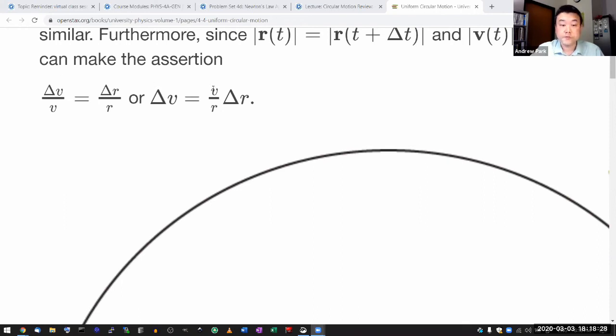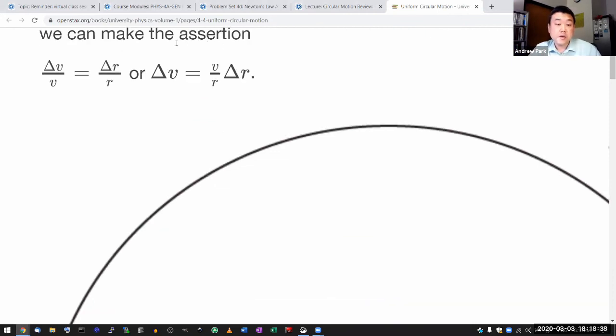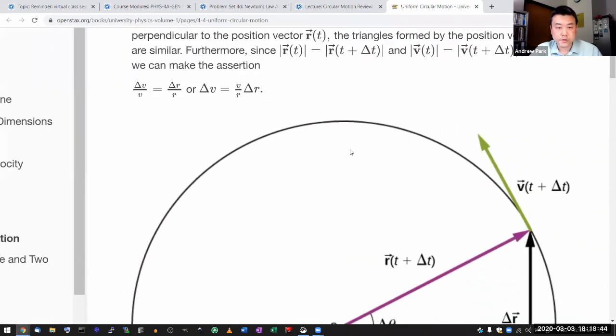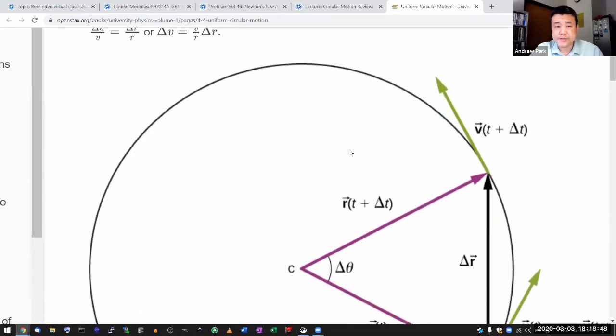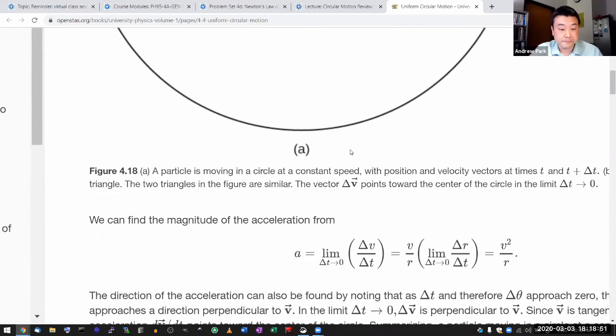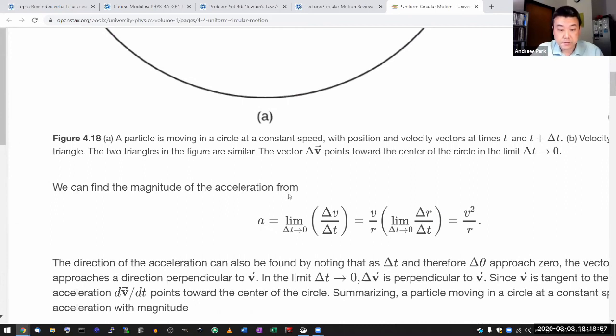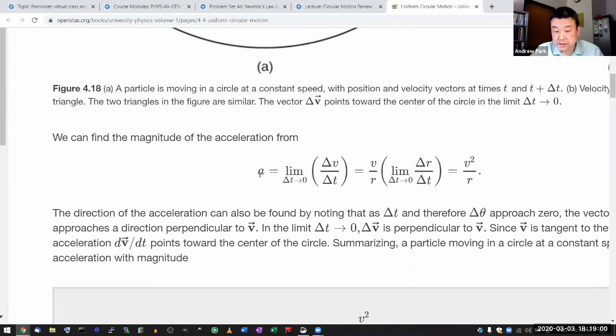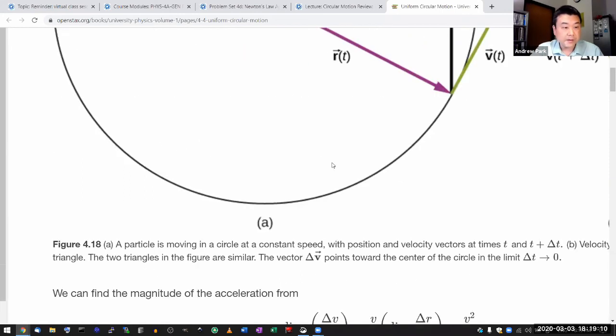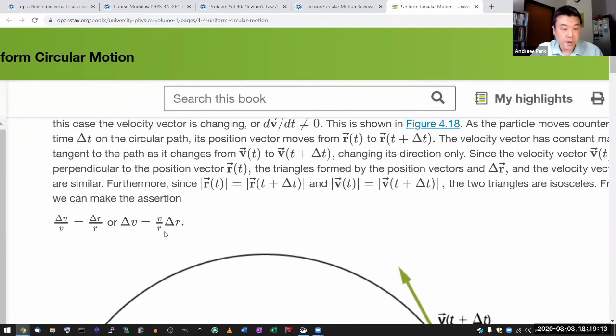And from this equation here they can say that solving for delta v, delta v is equal to v over r times delta r. And in the textbook derivation they are going to use this geometric factor delta r to finish their derivation of centripetal acceleration formula. I think when I did this lecture in fall 2017 I took a different path. So now they are finally finding the magnitude of acceleration. Starting out with the instantaneous acceleration is the limit where delta t goes to zero, change in velocity over delta t.